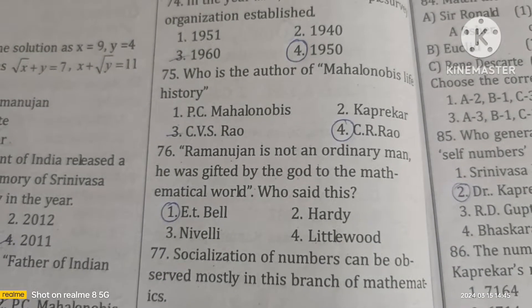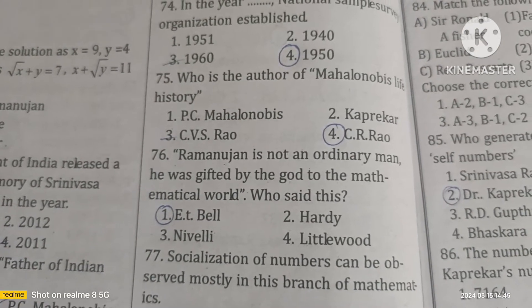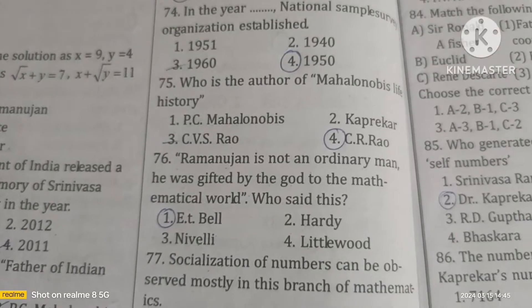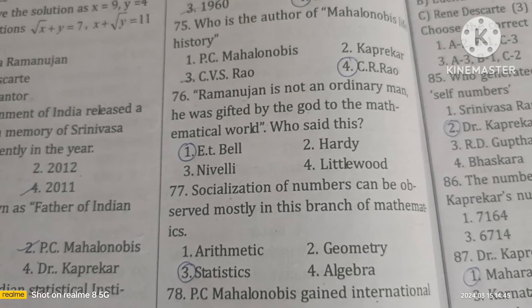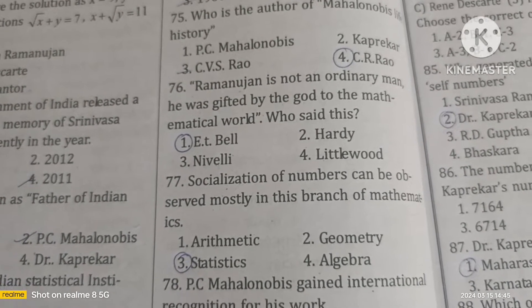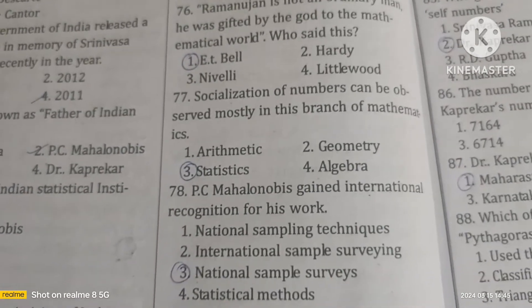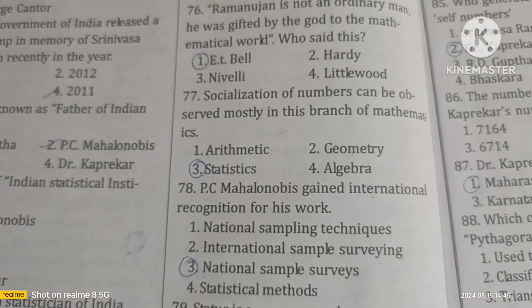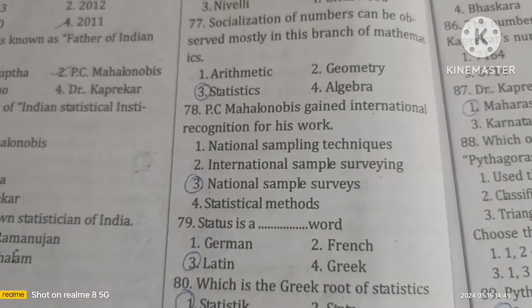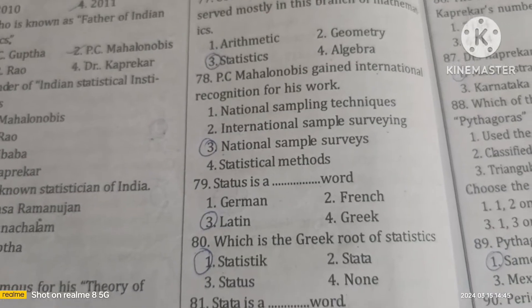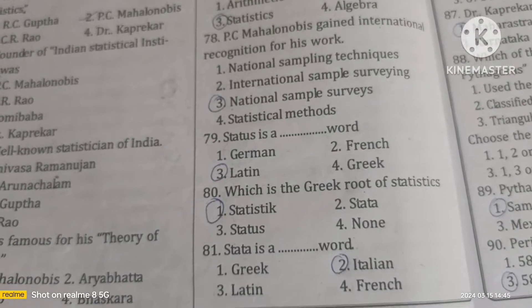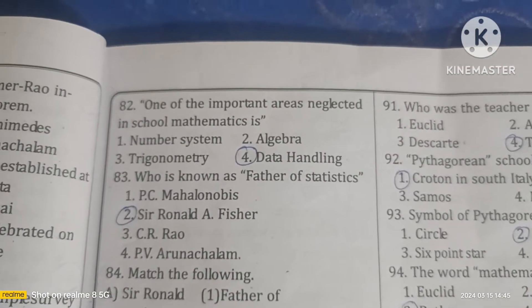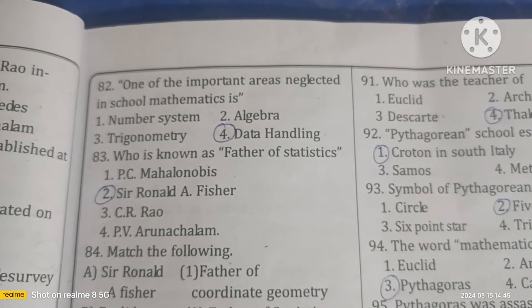The National Sample Survey Organization was established in 1950. The author of Mahalanobis's life history is C.R. Rao. 'Ramanujan is not an ordinary man; he was gifted by God to the mathematical world' — this was said by E.T. Bell. Socialization of numbers can be observed mostly in statistics. P.C. Mahalanobis gained international recognition for his work on national sample surveys. The word 'status' is a Latin/Italian root of statistics. One important area neglected in school mathematics is data handling.